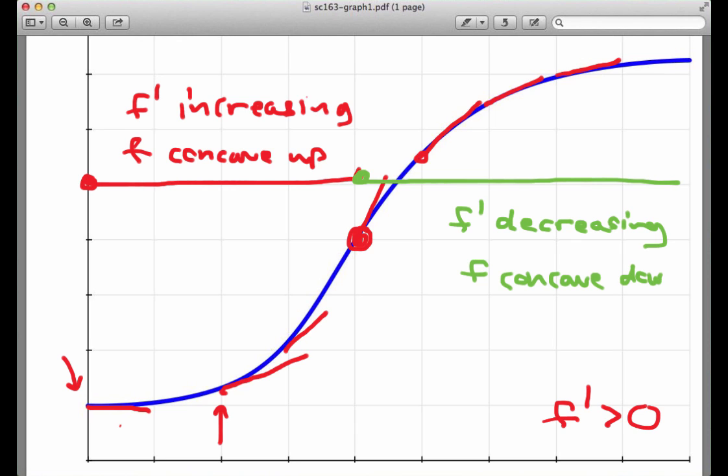So here's an example of a function that is increasing everywhere, but increasing at an increasing rate for a while, and then increasing at a decreasing rate for a while.